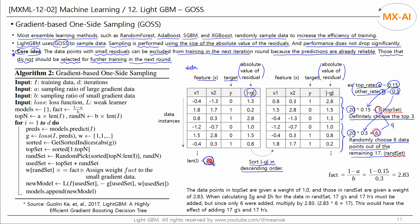Here, the residual is the first-order gradient G. This is what 'gradient-based' means. Sampling is performed only on the data points with small residuals. This is what 'one side' means.